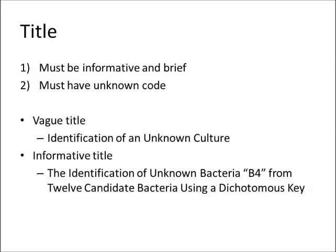While you're there, go ahead and take a look at all the different titles and you'll notice a pattern emerges. Titles are one of those things in scientific writing that are very distinct — they have to be done just a certain way, otherwise the entire paper looks bad, and in the real world that usually means getting rejected and never getting published. It's got to be informative and brief, and for the sake of this write-up, it has to include the unknown code. A vague title will lose you marks right away. For example, just saying 'the identification of an unknown culture' says nothing distinct. A better title would be: 'The identification of unknown bacteria, whatever yours is, from the 12 candidate bacteria using a dichotomous key' — it's got all your keywords, it's exact and unique without being overly long.